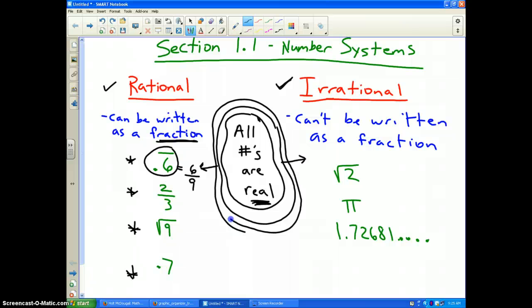2 thirds is already in fraction form. Square root of 9, we all know that is the number 3, and we all know you can write 3 as a fraction by putting it over the number 1. So square root of 9 can be written as a fraction.